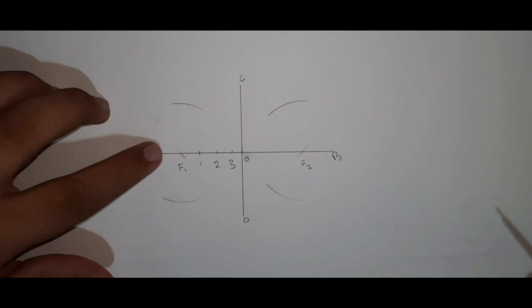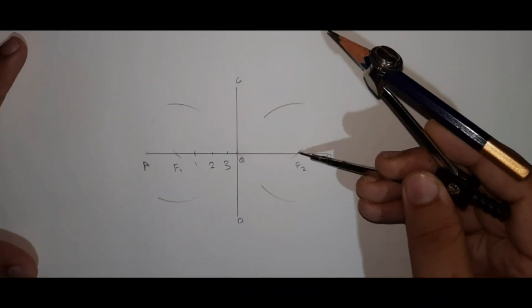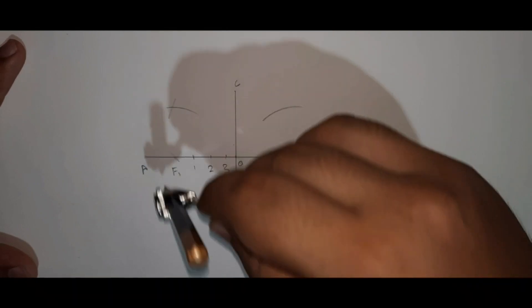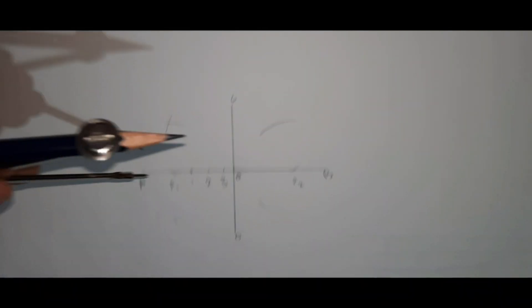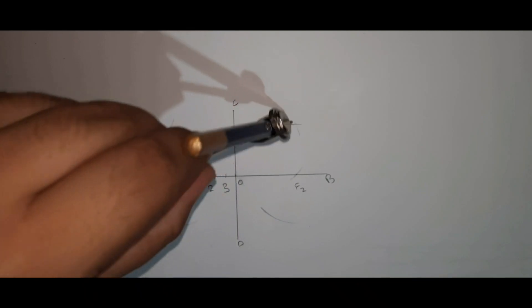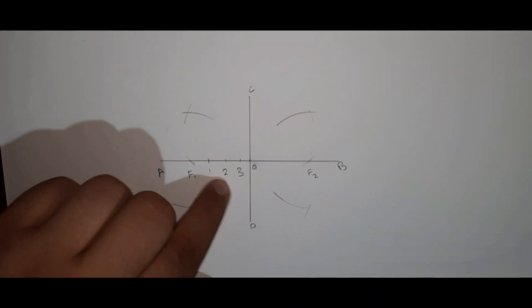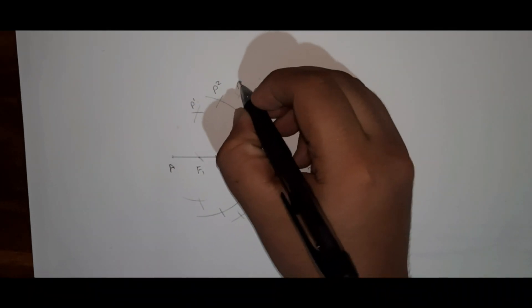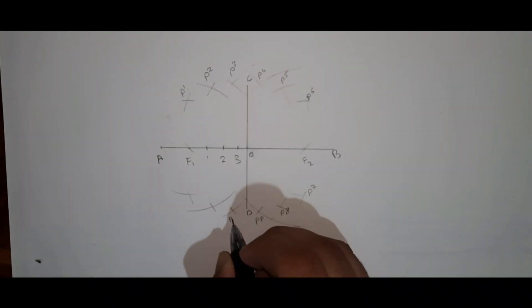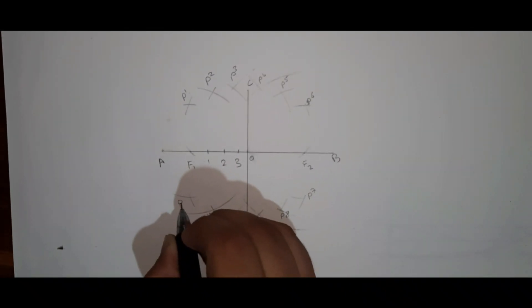Taking F1 and F2 as center and B1 as radius, cut these 4 arcs from F2 and F1 respectively. Repeat the same step for point 2 and point 3, taking the points P1, P2, P3, P10, P11, P12.